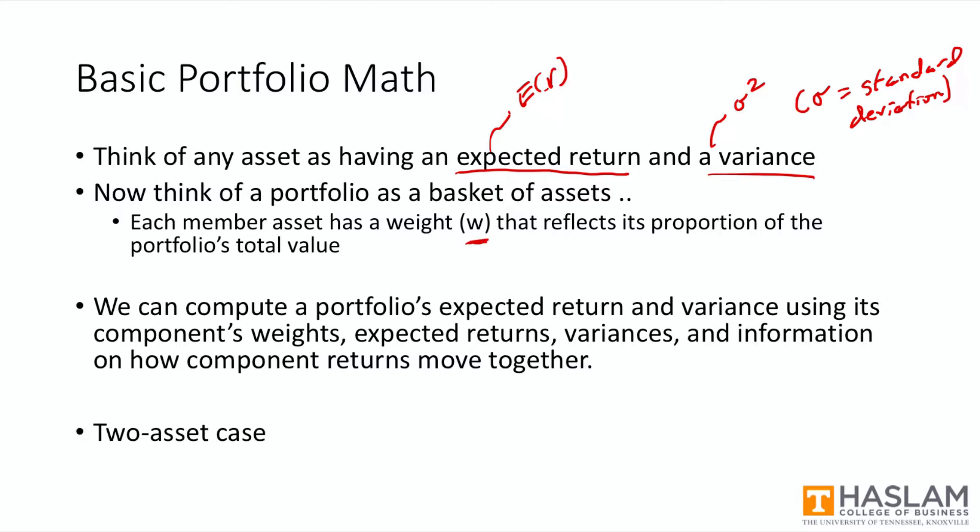This weight reflects the proportion of the portfolio's value accounted for by that asset. So if one-fourth of a portfolio's total value is in Apple stock, we would say Apple's weight, or W Apple, is equal to 0.25. Now if we know each asset's weight, expected return, variance, and have some indication of how the asset's returns move alongside one another, we can compute the portfolio's expected return and variance.